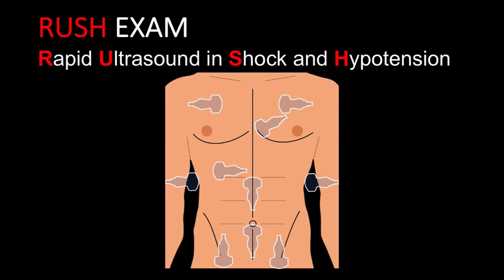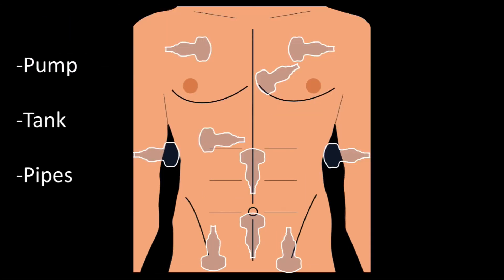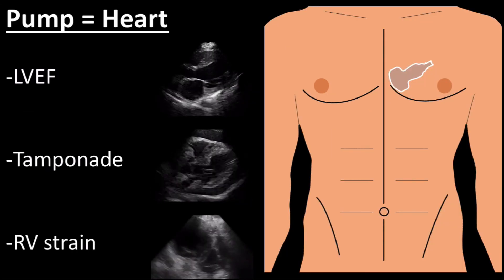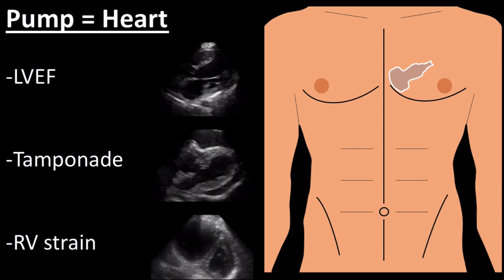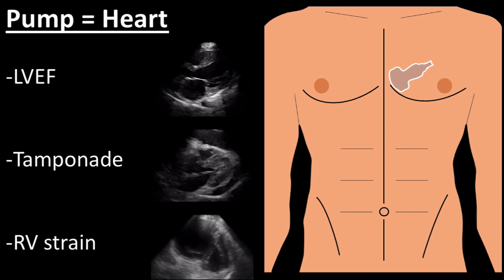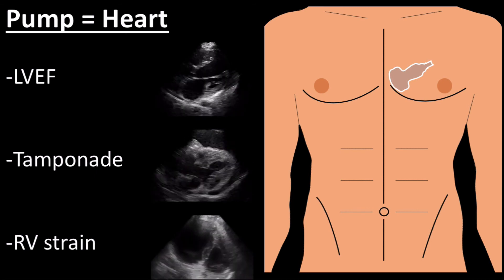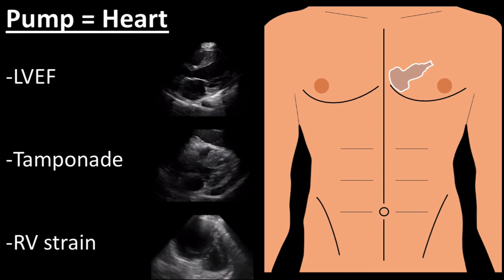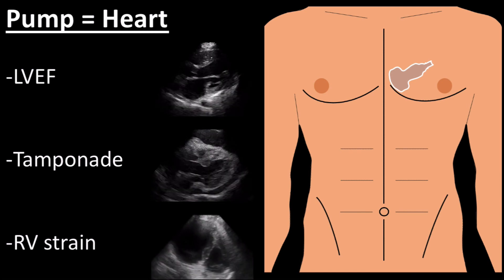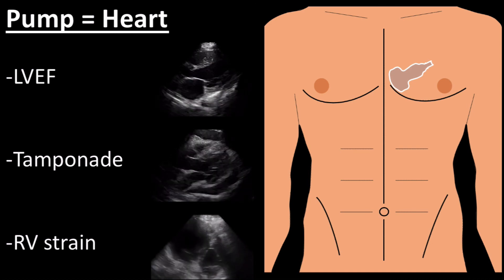As mentioned earlier, a hypotensive scan is often known as the RUSH examination — Rapid Ultrasound in Shock and Hypotension. The exam can be simplified using a physiologic perspective: the pump, the tank, and the pipes. The pump refers to obtaining high-yield views of the heart, specifically looking for pericardial effusion indicative of tamponade, assessing left ventricular ejection fraction as a measure of cardiac function, and looking at the right side of the heart for evidence of strain indicating a massive PE. Pulmonary embolism causing right heart strain was covered in June 2020 and September 2019; tamponade was covered in December 2019.